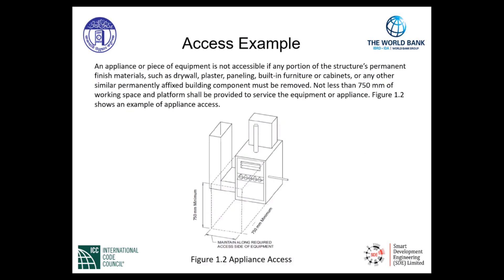An appliance or piece of equipment is not accessible if any portion of the structure's permanent finish materials — such as drywall, plaster, paneling, built-in furniture or cabinets, or any other permanently affixed building component — must be removed. Not less than 750 mm of working space and platform shall be provided to service the equipment or appliance. Figure 1.2 shows an example of appliance access, illustrating a service side with a maintained platform and minimum dimensions for serviceability of the permanently installed appliance.